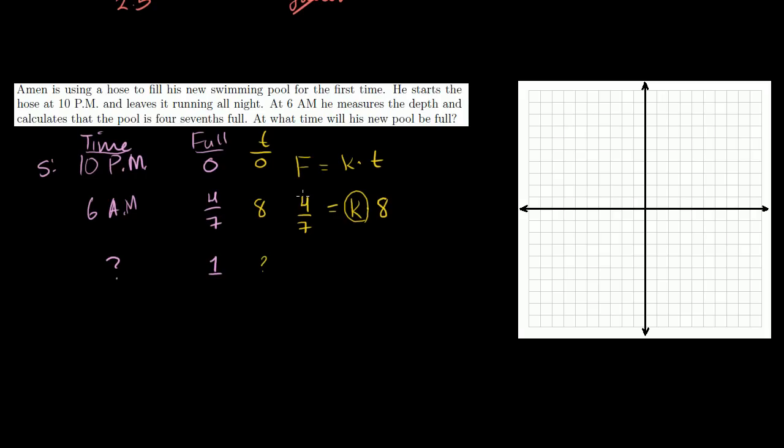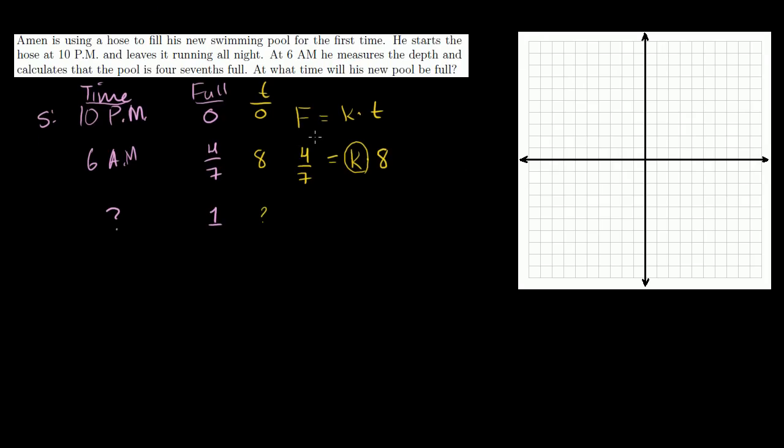So now we can actually figure out what k is. We can figure out what our proportionality constant is for our direct variation model. This pool filling business can be modeled by an equation like this. The amount that we're full is directly proportional to the amount of time that we let the hose run. And this is the proportionality constant. Now we can figure out how quickly it fills, because we know after 8 hours, it is 4 sevenths full. So to solve for k, you divide both sides by 8 hours. So we get k equals 4 sevenths full divided by 8 hours, which is the same thing as 4 over 7 times 1 over 8 full per hour. So we get 1 over 14th fullness per hour. We fill 1 fourteenth of the pool per hour.